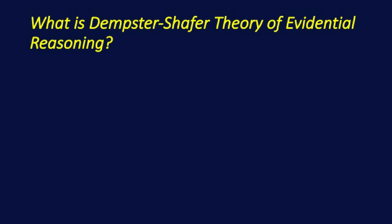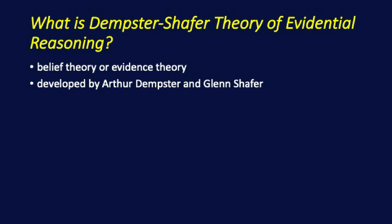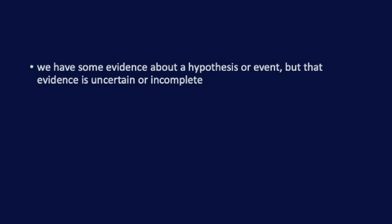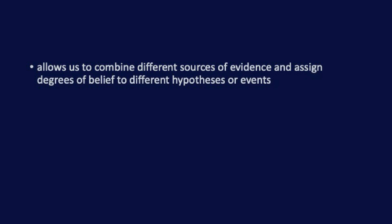The Dempster-Shafer theory of evidential reasoning, also known as belief theory or evidence theory, is a mathematical framework for reasoning with uncertainty and incomplete information. It was developed by Arthur Dempster and Glenn Shafer in the 1960s as an alternative to classical probability theory. The theory deals with situations where we have some evidence about a hypothesis or event, but that evidence is uncertain or incomplete. It allows us to combine different sources of evidence and assign degrees of belief to different hypotheses or events.